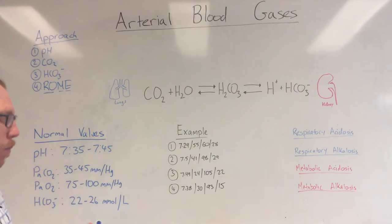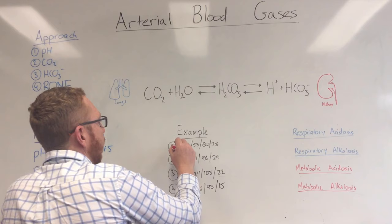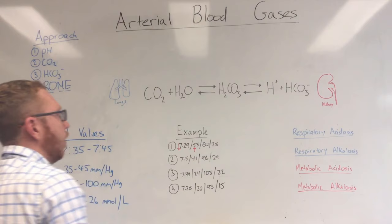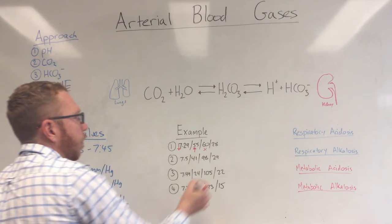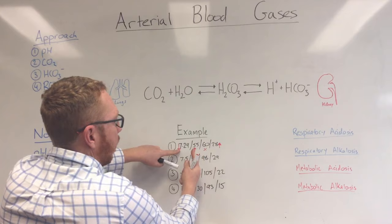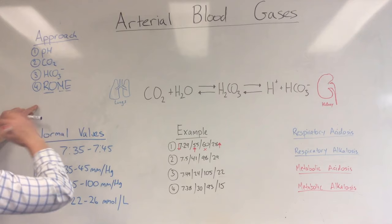Example one: 7.29 / 60 / 60 / 28. The pH of 7.29 is below 7.35, so it's down. The CO2 of 60 is above 45, so it's up. The O2 of 60 is low. The bicarbonate of 28 is above 26, so it's high. We've got CO2 up and bicarbonate up, but pH down. Since CO2 is opposite to pH, by ROME this is a respiratory issue.